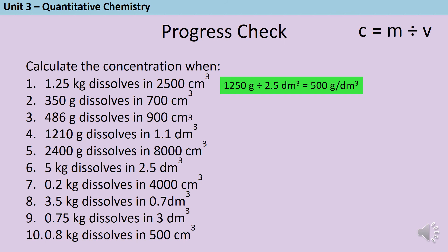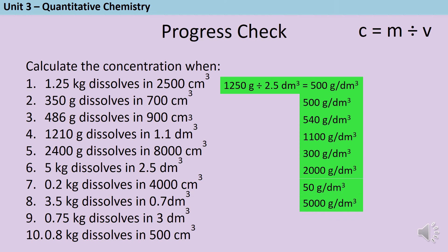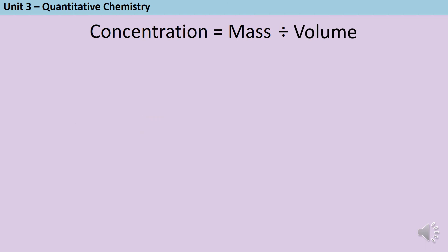Pause the video and have a go at the rest of them now. The answers are: 500 grams per decimetre cubed, 540, 1100, 300, 2000, 50, 5000, 250, and 1600.